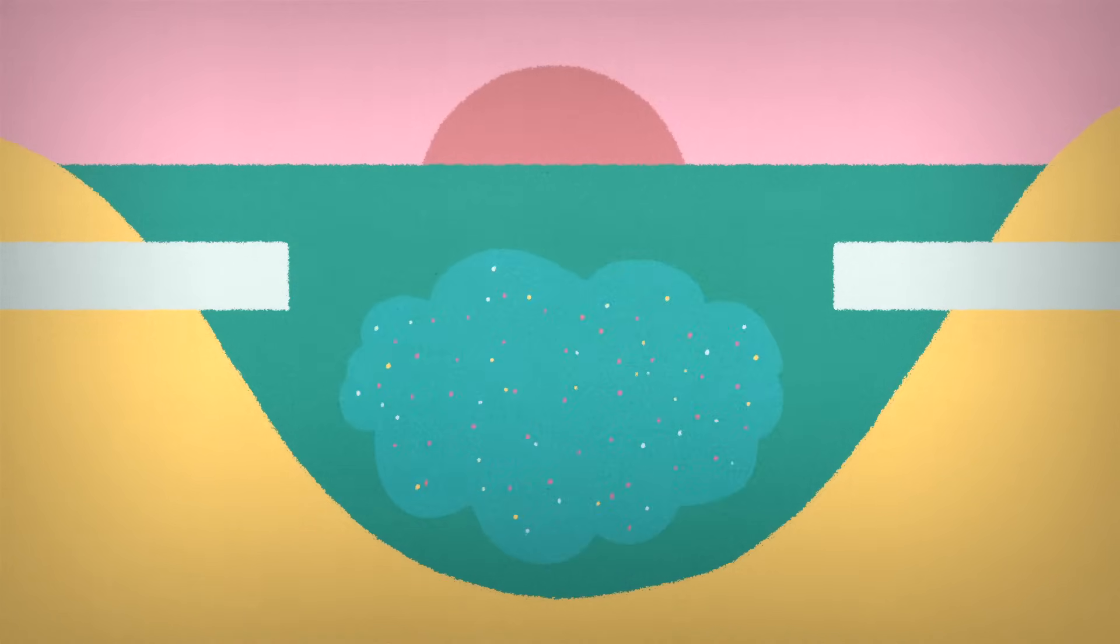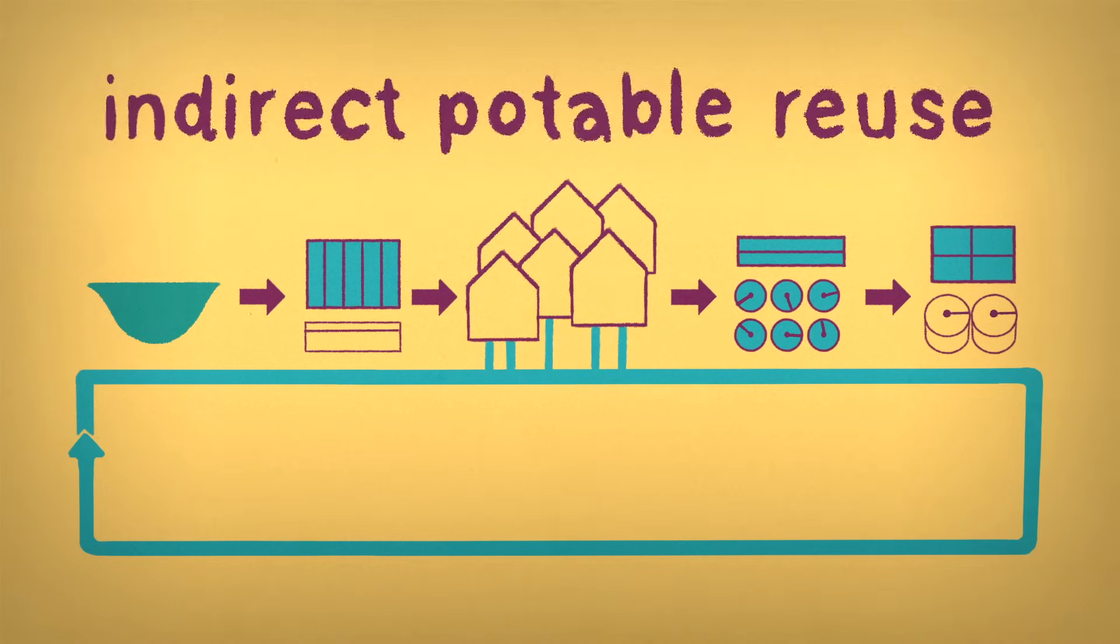In indirect potable reuse, the treated wastewater is discharged to an environmental buffer, such as a reservoir, lake, wetland, or groundwater aquifer. After some time in this environment, any lingering chemicals from the treatment process will diffuse and degrade. Then, the water can be extracted and enter the drinking water pipeline.